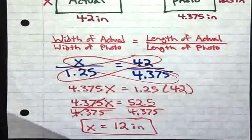Notice that I paired my widths up. So I have the width over the width. That's exactly how we want to do it when we solve, when we write our proportions out. And I'm going to set that equal to the length of my actual which is 42 inches over the length of my photo which is 4.375 inches. And at this point, I have my proportion.